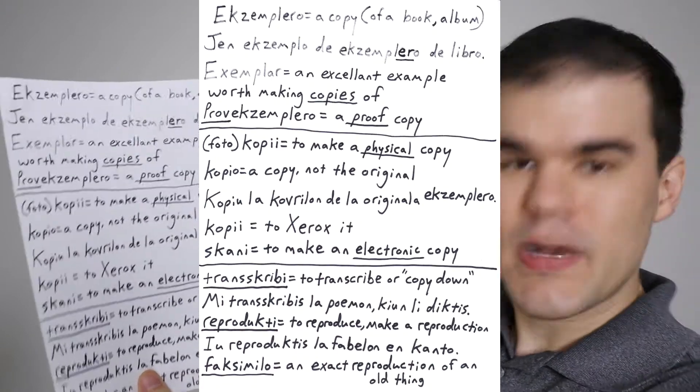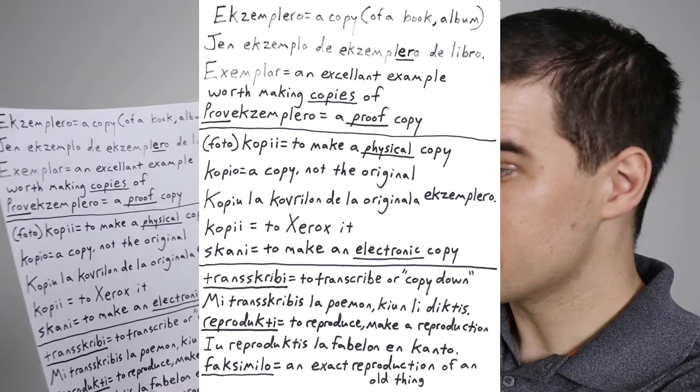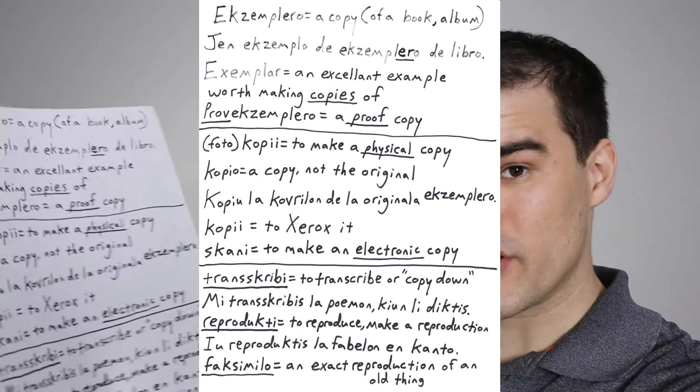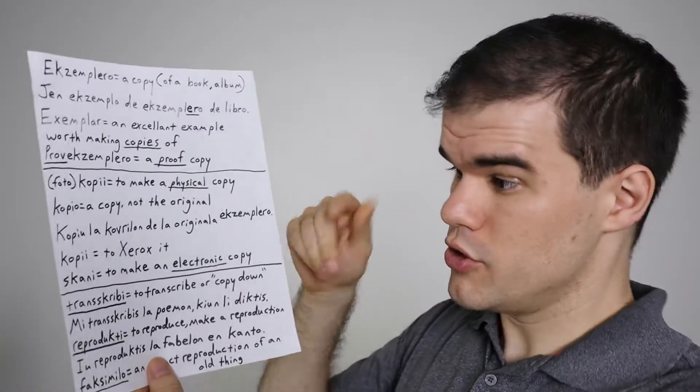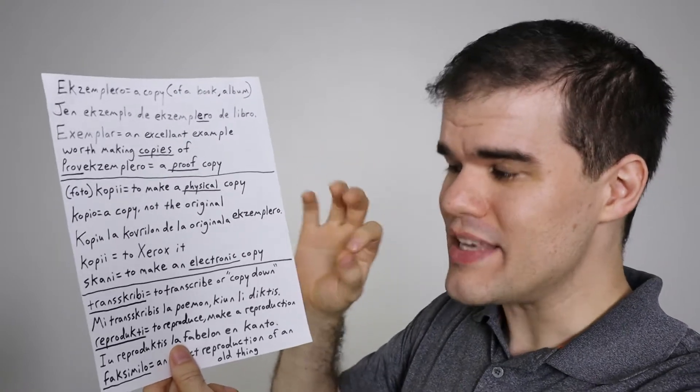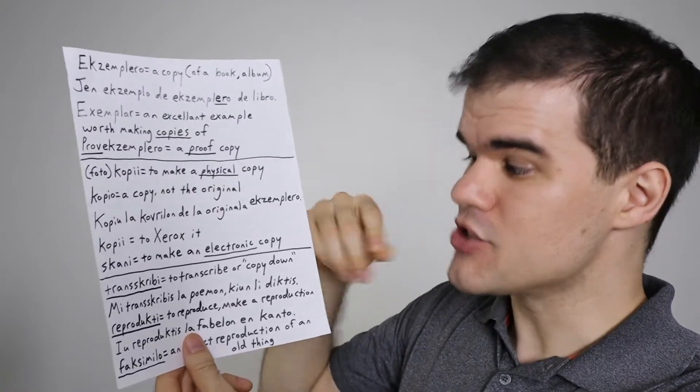So, copii, another way to think of it is to Xerox it. Think of it that way because you are really just running it through a machine to create another copy real quick. I don't use photocopii very often. I don't use photocopiers. What I use most of the time is a scanner. I'll scan things and then email it. In today's society, that's how you do it. So the word to use for that is not necessarily copii, but scani. Scani is to make an electronic copy, to digitalize something, to make a digital copy.